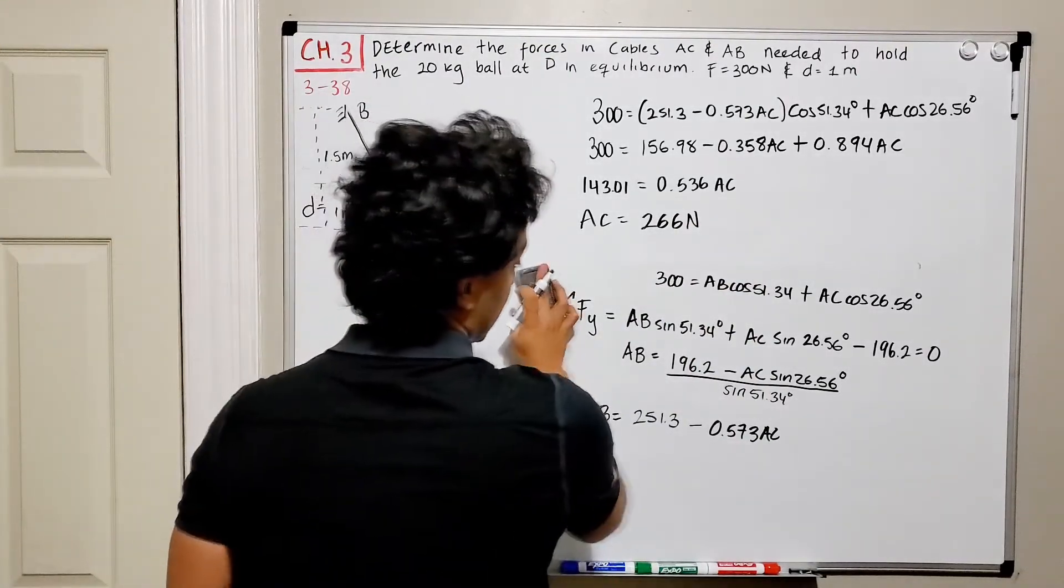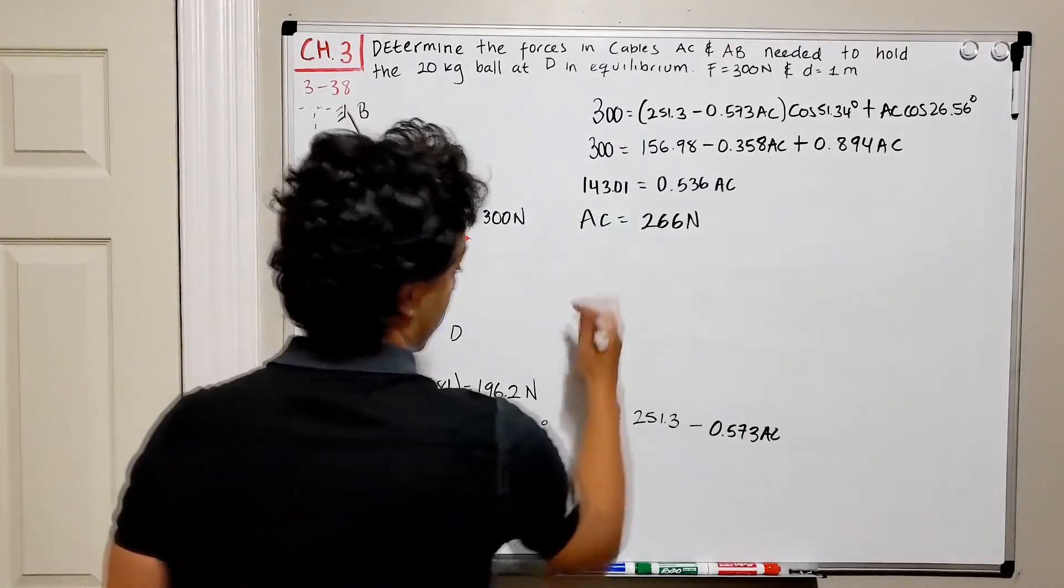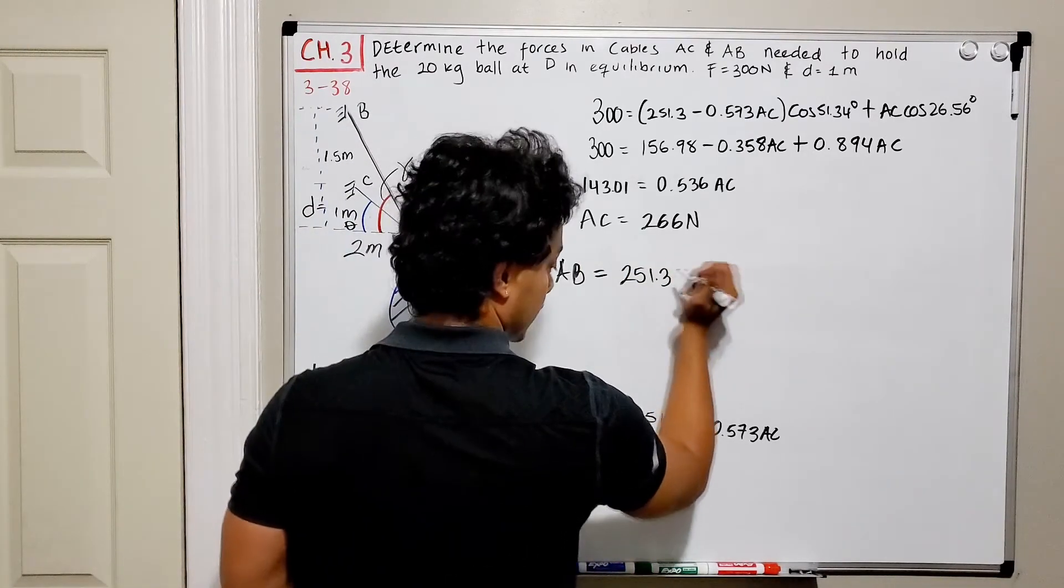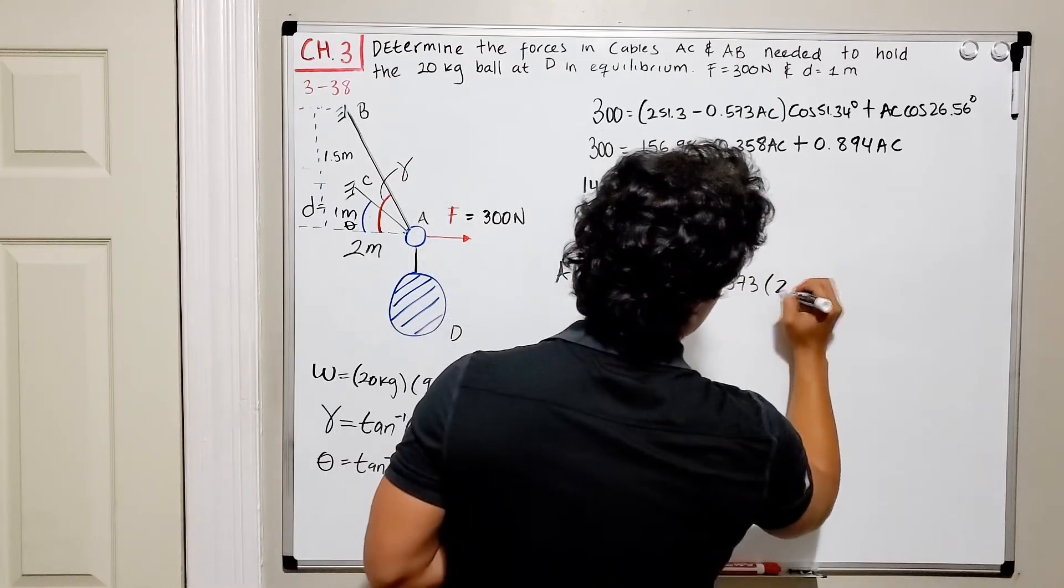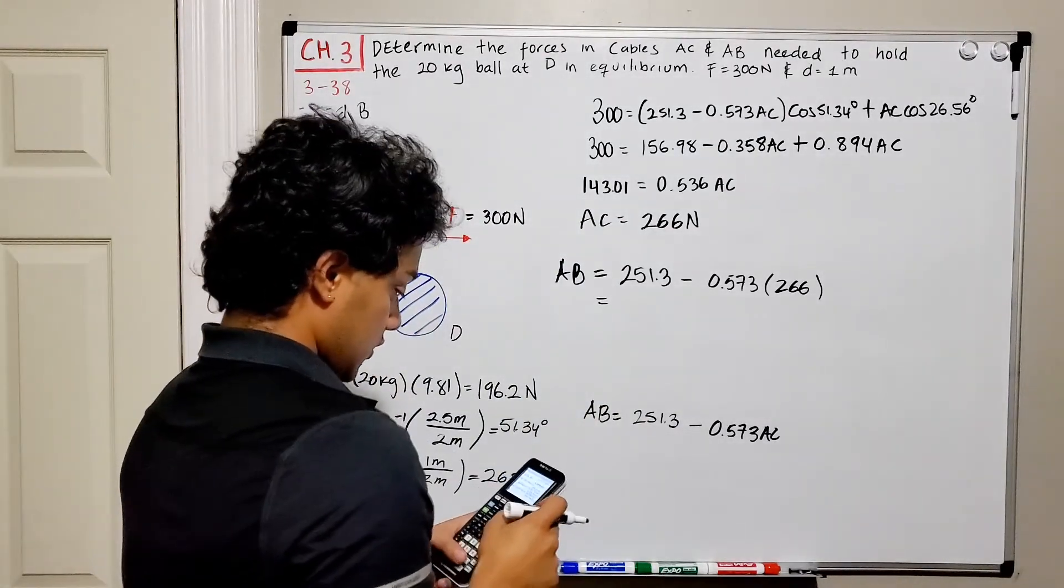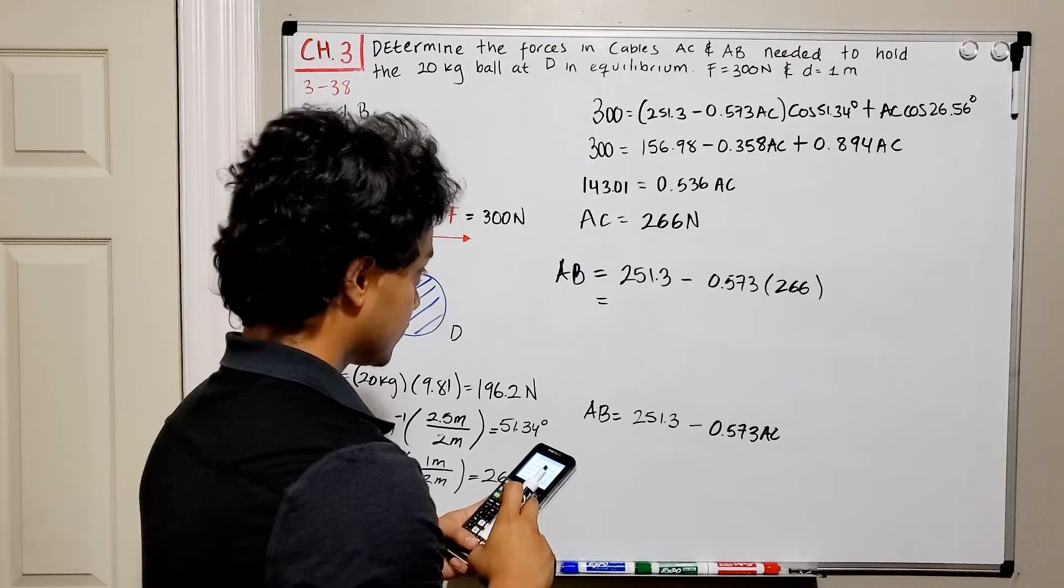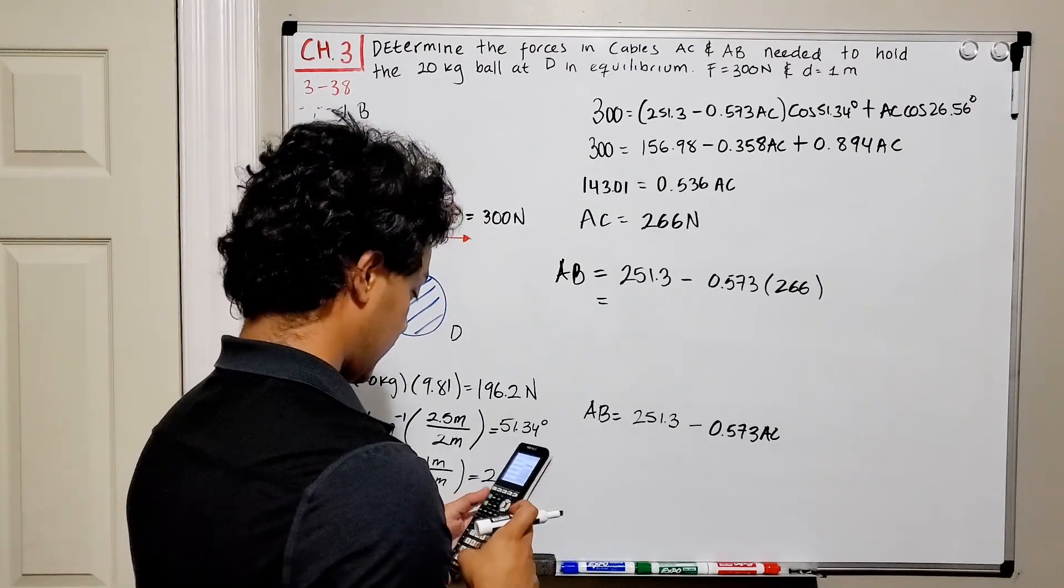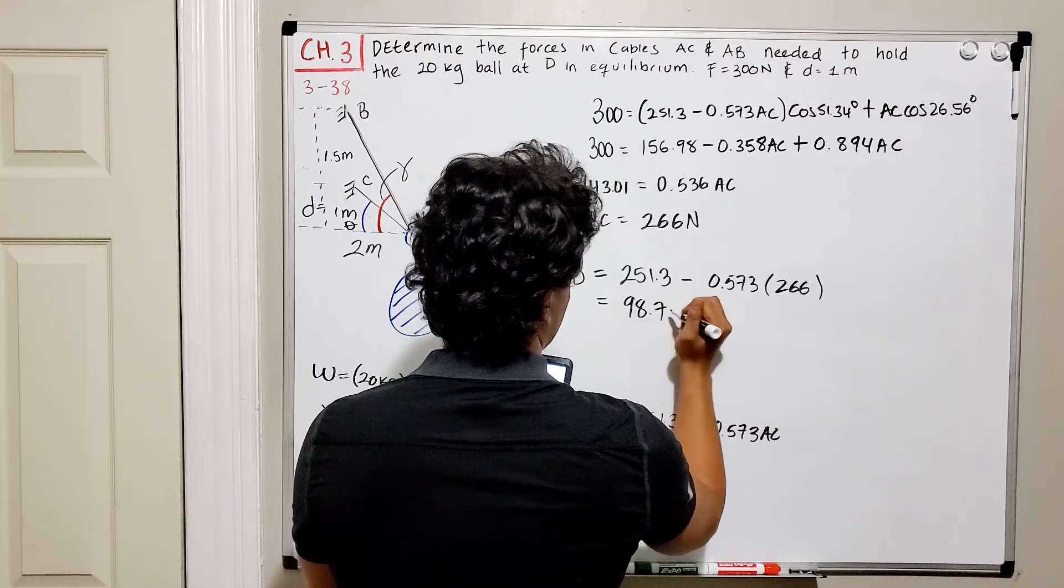Now, we can check what AB is equal to using this final equation. So AB is going to be equal to 251.3 minus 0.573 multiplied by 266. So we got 251.3 minus the multiplication of 0.573 multiplied by 266. My final answer is equal to 98.7 newtons.